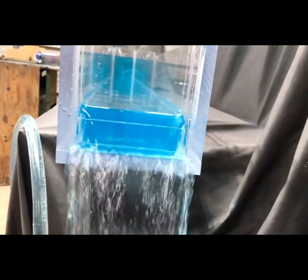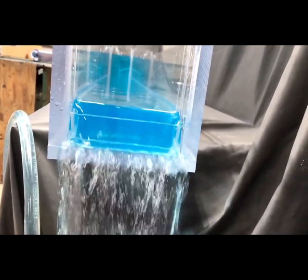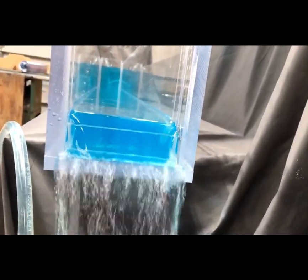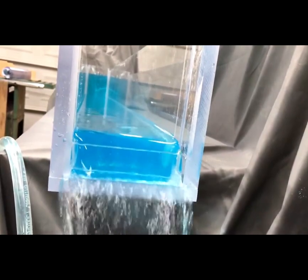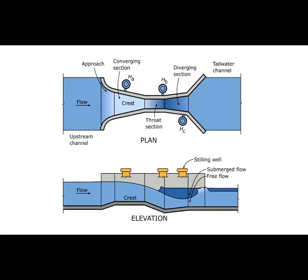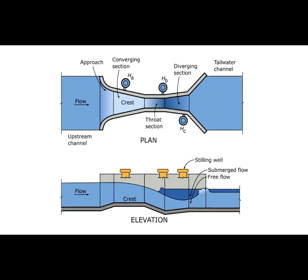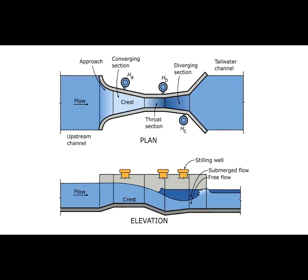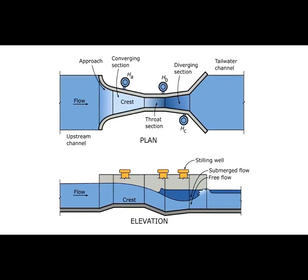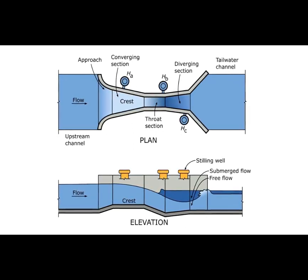A flow profile can naturally transition from subcritical to supercritical — that is, from slow to fast. For example, if a channel changes to a steeper slope or a cliff. Many types of flow measurement devices rely on forcing a flow to transition from sub to supercritical because there will be a unique relationship between the flow rate and the depth for a given geometry.